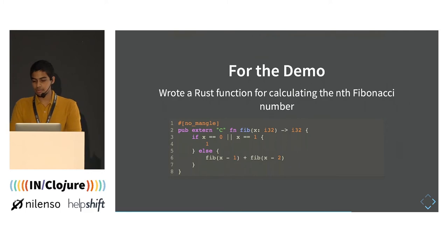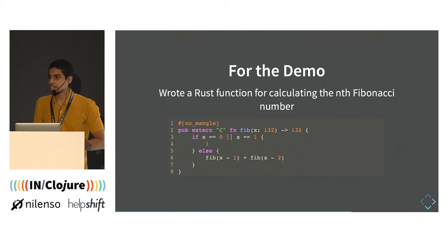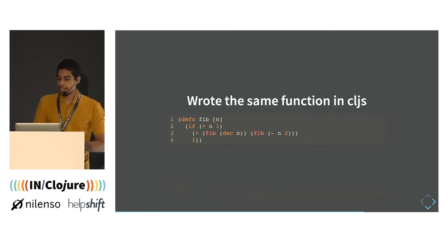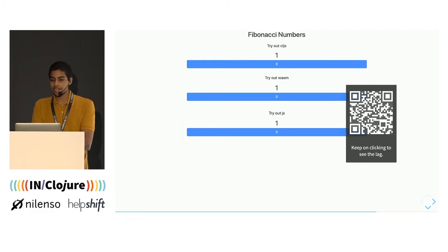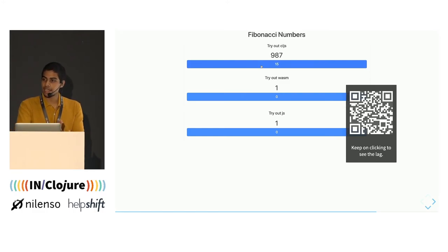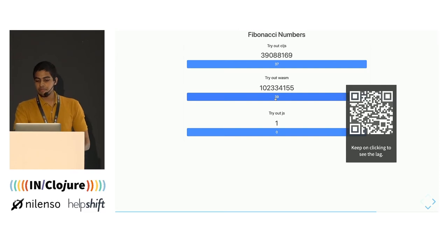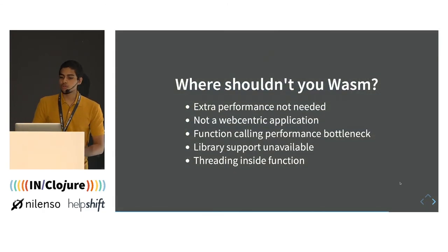I wrote a Rust function to calculate the nth Fibonacci number — a recursive function. Rust doesn't support tail call optimization by default, so this function isn't tail-call optimized after compiling to Wasm. I wrote the same function in ClojureScript, also not tail-call optimized. In the demo, the upper button uses ClojureScript: after reaching around a value of 30, ClojureScript starts to slow down, and even JavaScript slows around 34. But Wasm keeps up until around 40-42. It doesn't represent the real-world use of Wasm, but it demonstrates that Wasm is closer to the CPU and has more performance.